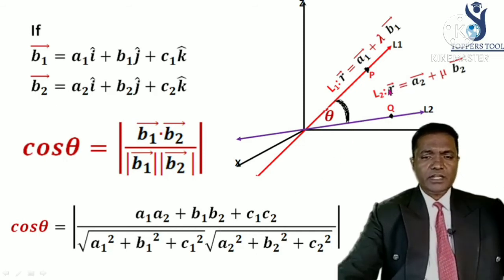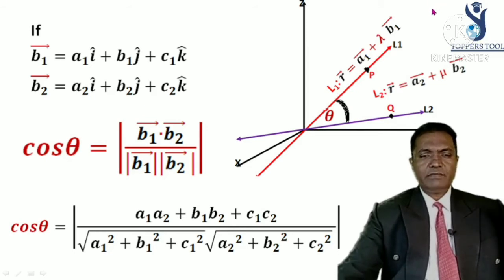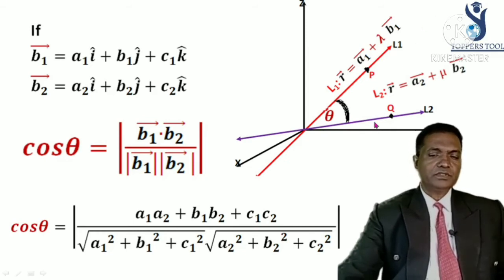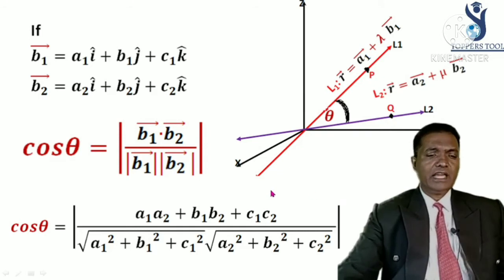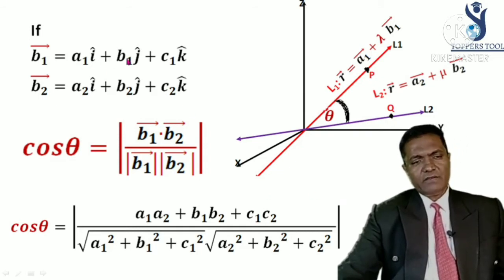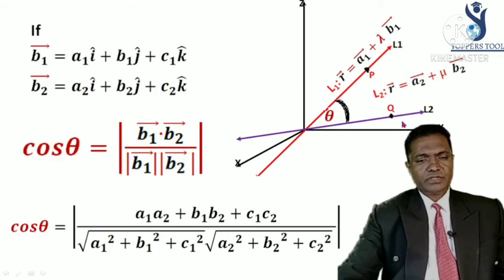If there are two lines which are not passing through the origin, to find the angle between them you draw lines parallel to them passing through the origin — that is a simple thing. Using this idea, you can find the angle between any two lines. Here A1, B1, C1 are direction ratios of L1 and A2, B2, C2 are direction ratios of L2.